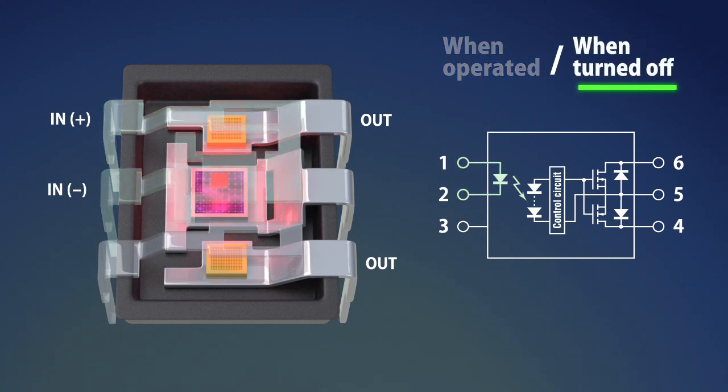PhotoMOS will be turned off when the current at the input terminal is cut off. The LED stops emitting light, and the voltage of the photoelectric element decreases.